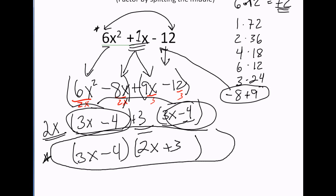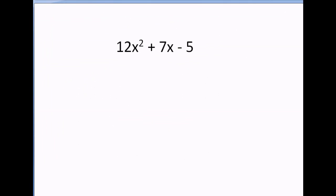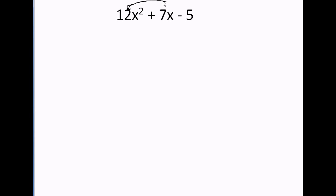Let's try one more problem. 12x plus 7x minus 5. Step number 1. Multiply the first term and the last term. 12 times 5 equals 60.